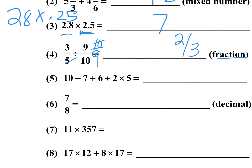Number five is order of operations. We have to do the division and multiplication first: 6 divided by 2 is 3, and 3 times 5 is 15. Then 15 plus 3 is 18.